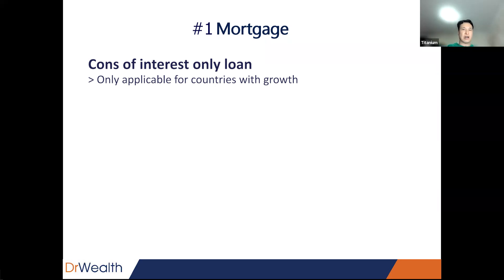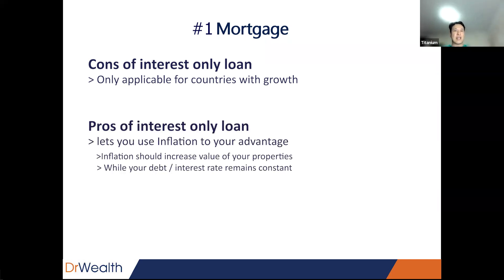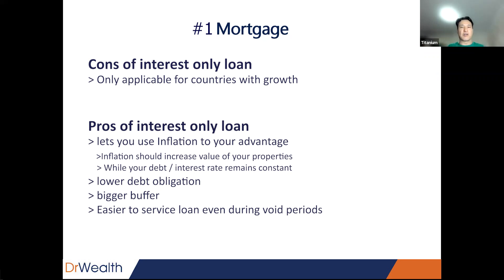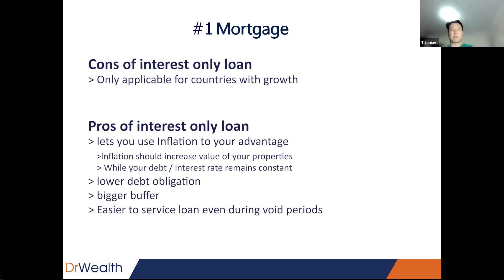Interest-only loan is what I prefer. However, it can only apply to cities or countries where the population, jobs, and incomes are growing. You cannot apply it in a place where there's deflation — think of countries like Japan where I would not use an interest-only loan. The key advantage is to let inflation increase the value of your assets while economic growth and salary growth drive up the valuation of the property, and your debt remains the same. Because your obligations are much lower, you are likely to have a bigger buffer during void periods and will continue to service the loan, and the banks will usually not ask you to top up. In my view, it's often less risky if applied in the correct areas.